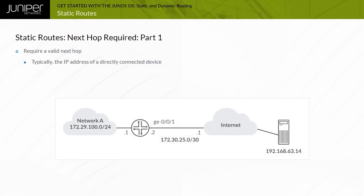Static Routes must have a valid Next Hop defined. Often the Next Hop value is the IP address of the neighboring router headed towards the ultimate destination. On point-to-point interfaces, you can specify the egress interface name as the Next Hop rather than the IP address of the remote device.